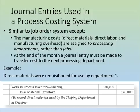Let's look at the journal entries required under a process costing system. They're quite similar to a job order costing system, except that manufacturing costs — direct materials, direct labor, and manufacturing overhead — are assigned to processing departments rather than to jobs. We will have more than one work in process account, one for each process in the manufacturing.